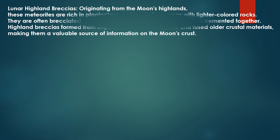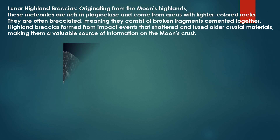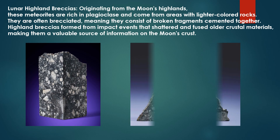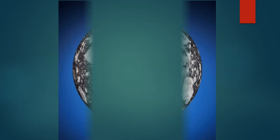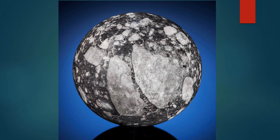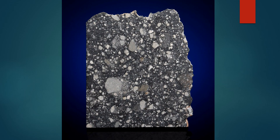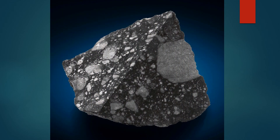Lunar highland breccias: originating from the Moon's highlands, these meteorites are rich in plagioclase and come from areas with lighter colored rocks. They are often brecciated, meaning they consist of broken fragments cemented together. Highland breccias formed from impact events that shattered and fused older crustal materials, making them a valuable source of information on the Moon's crust.